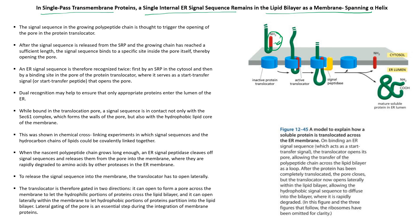Regarding the ER signal sequence: as soon as the polypeptide grows to a sufficient length, this N-terminus signal sequence binds to two things — first, it binds to the SRP (Signal Recognition Particle) present in the cytosol; second, it binds to the hydrophobic signal-peptide transfer binding site on the translocator pore. This signal sequence triggers the opening of the translocator pore — this is called dual recognition.